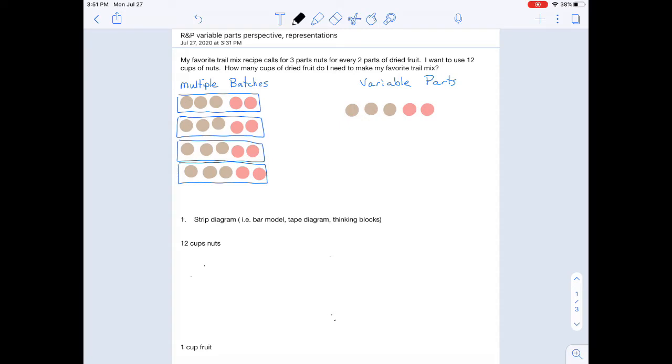The multiple batches perspective, we will start with our ratio and then we'll repeat it as if we're making one batch of the recipe, a second batch of the recipe, a third and fourth batch of the recipe, until we get to our desired amount, in this case our 12 cups, and we can look and see that we're going to need eight cups of dried fruit.